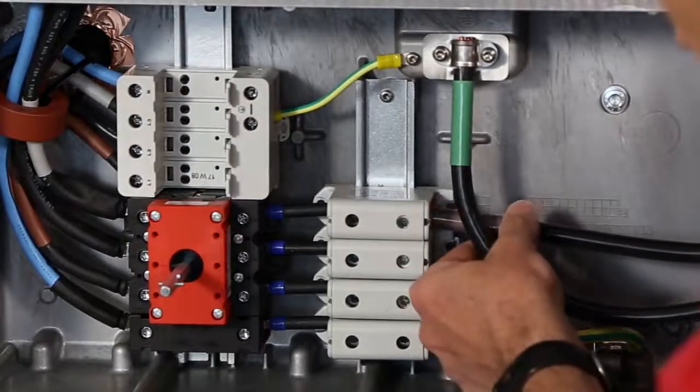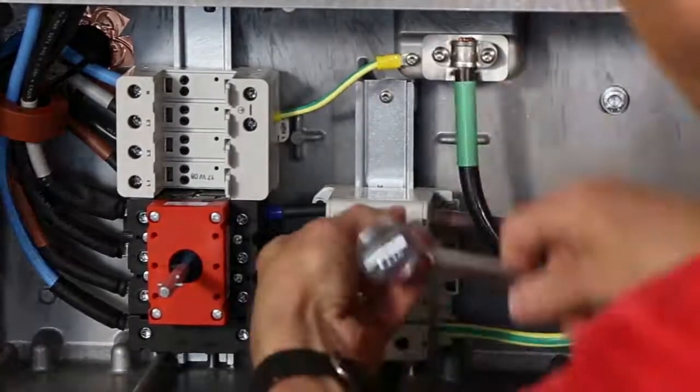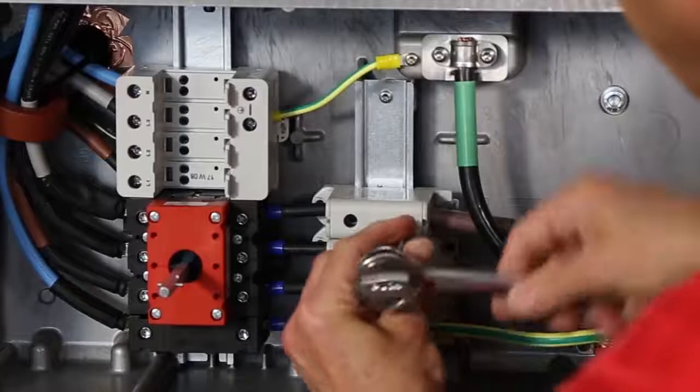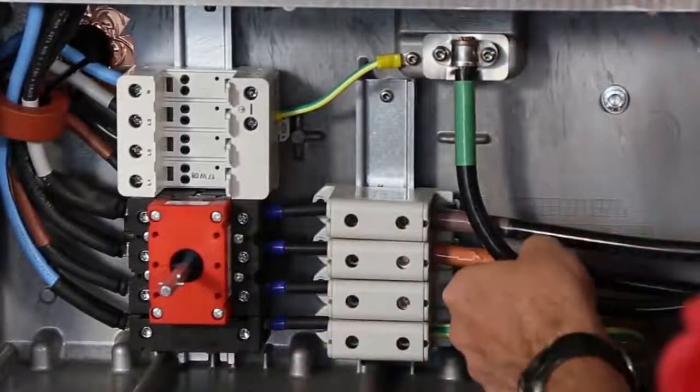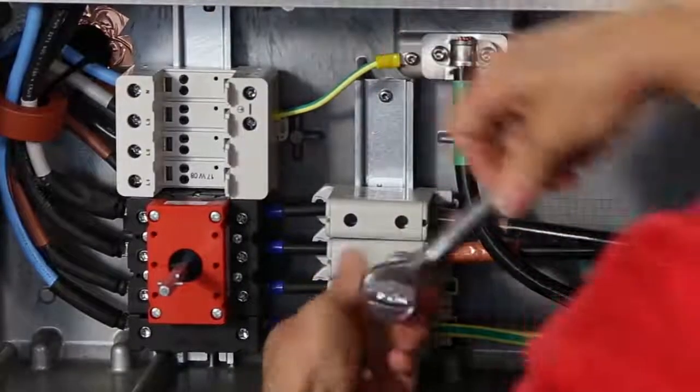Next we release the screws on the AC connection block with the Torx 30 screwdriver, bring in the conductors to the lower AC connection opening, and insert them on each of the three connection points. Tighten them down with the Torx 30 screwdriver.